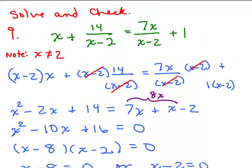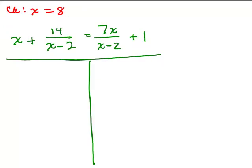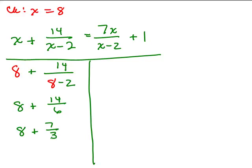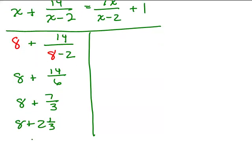Let's check x = 8 in this problem. Plugging in 8 for x: 8 plus 14 over (8 - 2) equals 8 plus 14/6, which reduces to 7/3. That's 2 and 1/3, so I have 8 plus 2 and 1/3, which gives me 10 and 1/3.